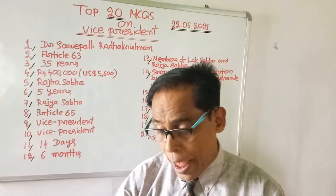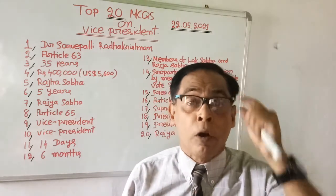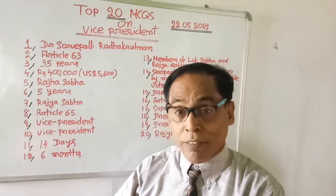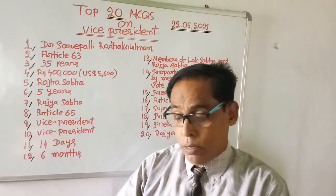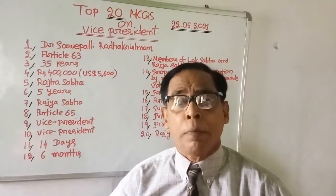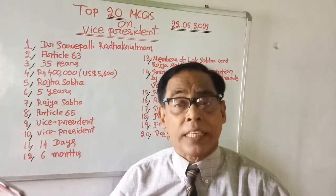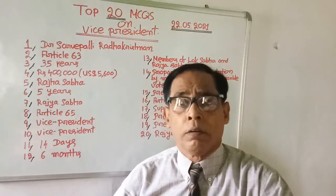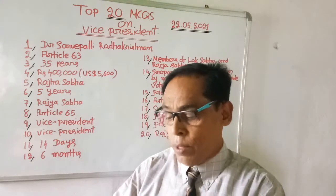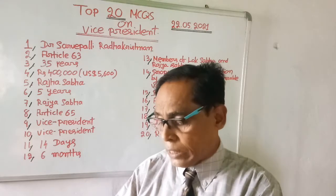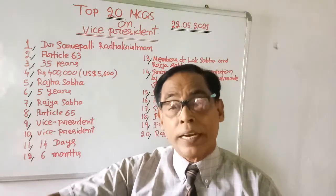Question number seven: The Vice President is the ex-officio Chairman of which house? Choices are Rajya Sabha, Lok Sabha, the Parliament, and State Legislative Assembly. The right answer is Rajya Sabha. We have now completed seven important multiple choice questions.